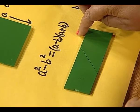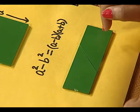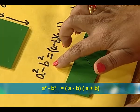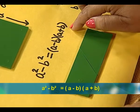So obviously, the area of this rectangle becomes a plus b into a minus b and hence, we have verified the identity a square minus b square is equal to a minus b into a plus b.